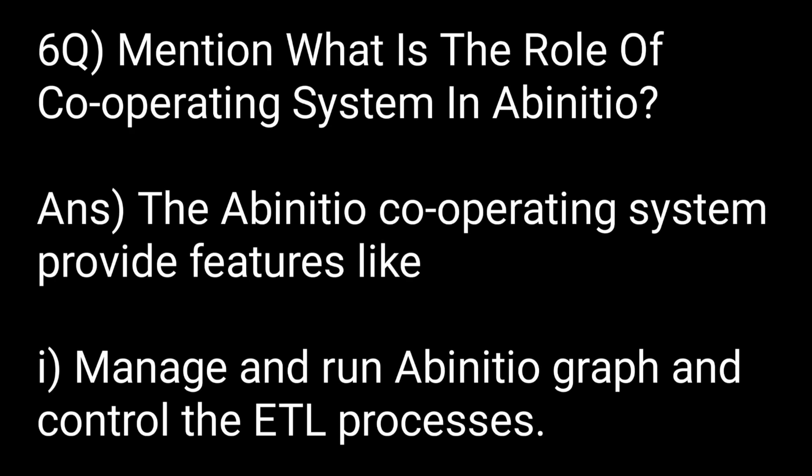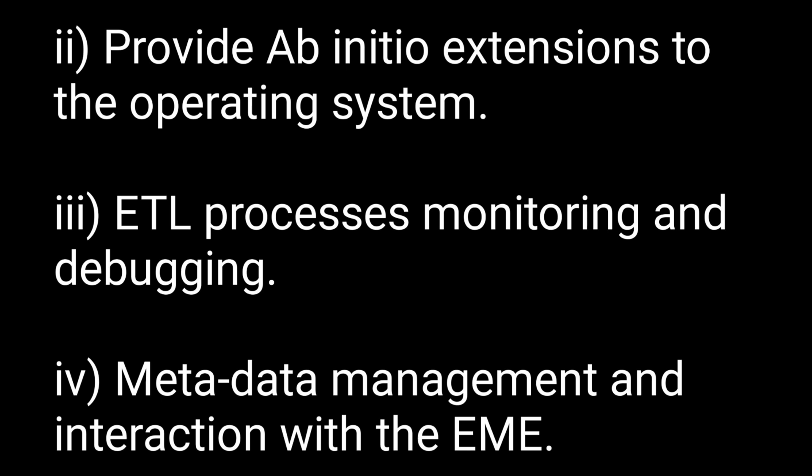Mention what is the role of the cooperating system in Ab initio. The Ab initio cooperating system provides features like managing and running Ab initio graphs, controlling ETL processes, providing Ab initio extensions to the operating system, ETL process monitoring and debugging, metadata management, and interaction with the EME.